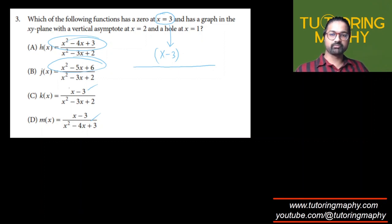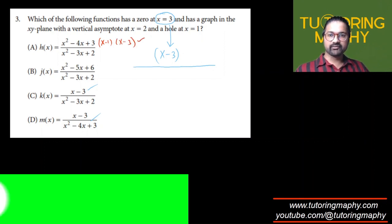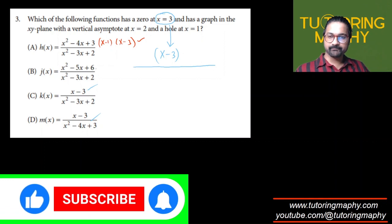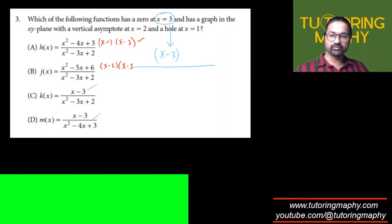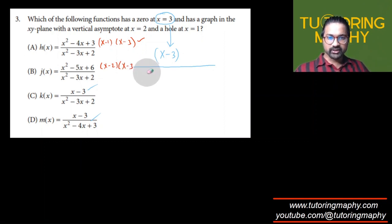So we have to keep that in mind. We cannot just rule out A and B just because we don't see any (x - 3) explicitly. If you want to factorize option A, the numerator will look like (x - 1)(x - 3), and indeed I have an (x - 3). And if you want to factorize this one, it will be (x - 2)(x - 3), and indeed there is an (x - 3) over here.